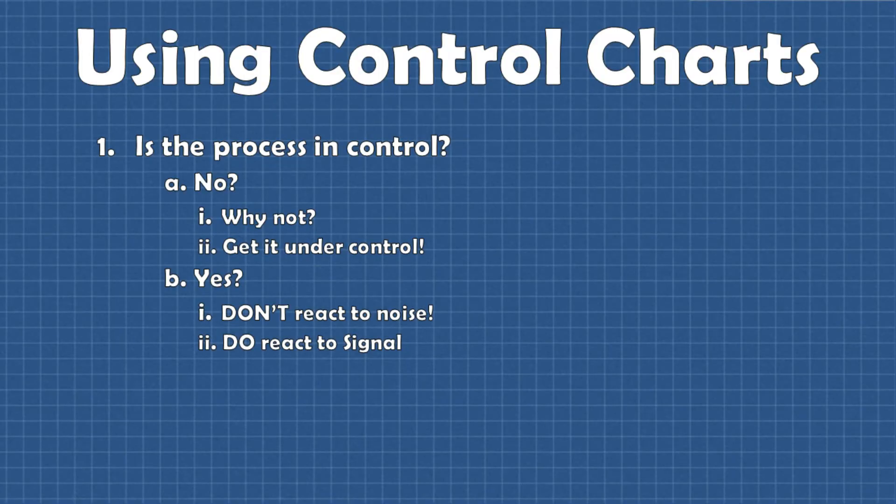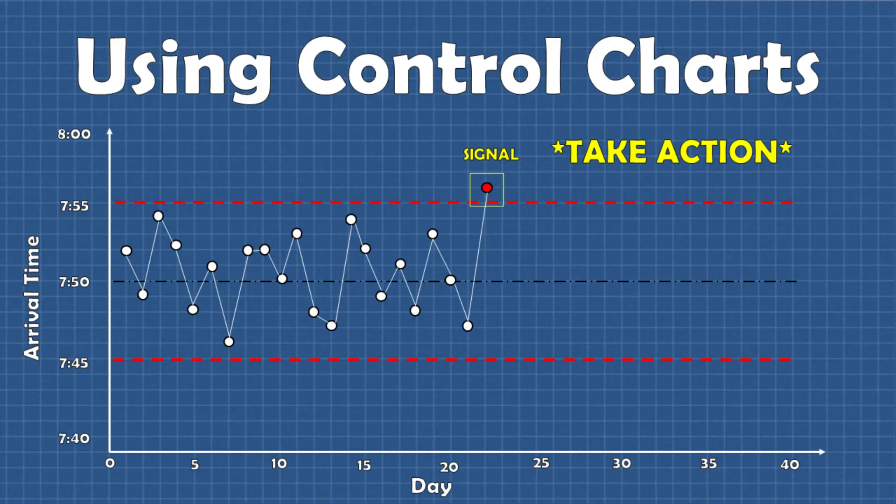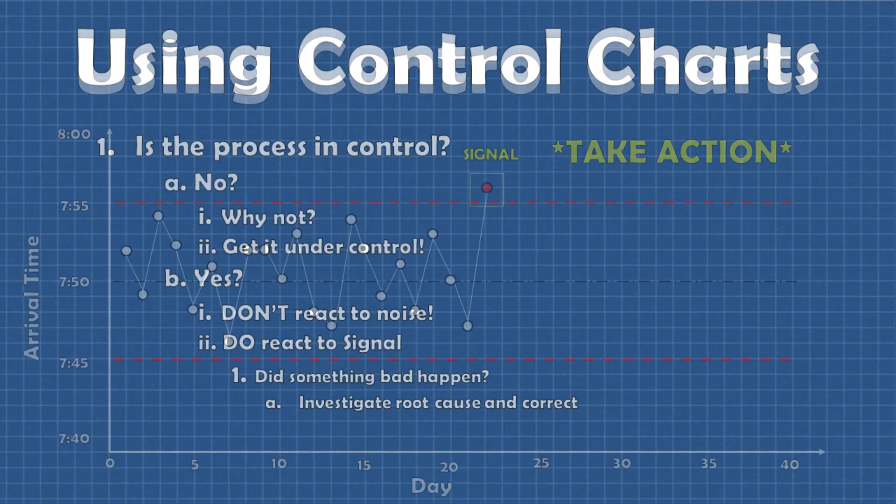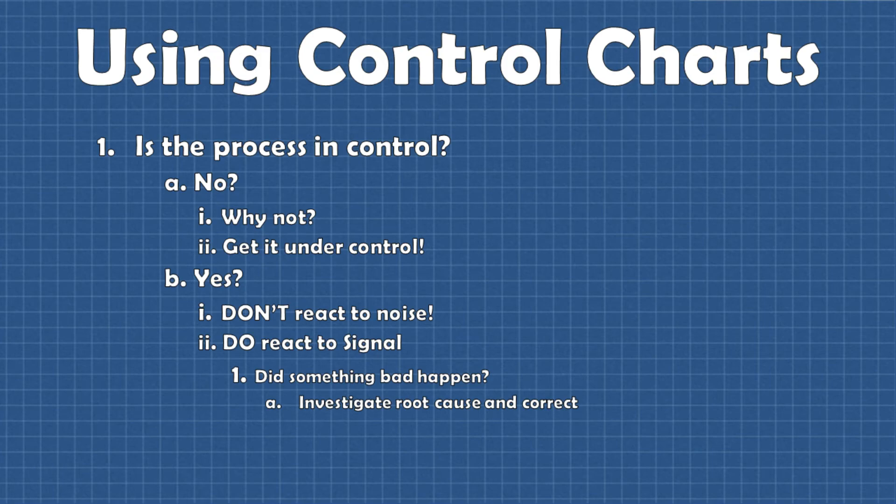On the other hand we do want to react to the signals because if there is a signal that means that there is an assignable cause behind it that is more than just normal variation. Signals tell us when to take action. Signals either tell us something good happened or something bad happened. In the cases where we don't want the process to move if we see a signal that means something bad happened. In these cases we should investigate the root cause and try to correct them.